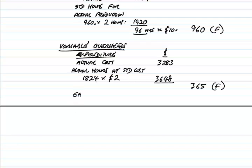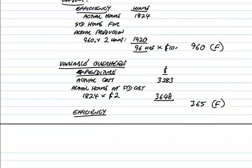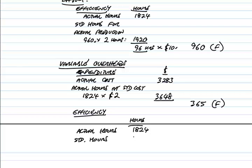Then the variable overhead efficiency variance. We can almost write this straight down since it's based on labour hours — exactly the same workings as for labour. Actual hours 1,824, standard hours for actual production 1,920, saving 96 hours. The only difference from labour is that variable overheads are charged at $2 an hour rather than $10, which gives 192. And again favourable.